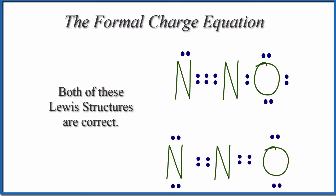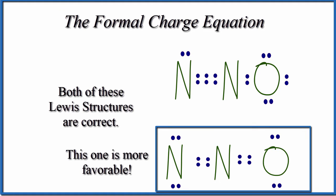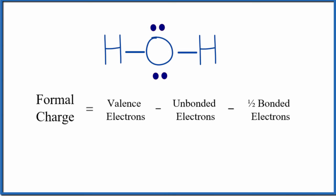I won't go into the theory of formal charges a lot here, other than to say that when we draw our Lewis structures, sometimes we can draw them two different ways and still obey the octet rule. What formal charges do is tell us a reasonably reliable way to determine what is the most favorable or most likely Lewis structure we'll see in the real world. The best Lewis structure from the formal charge standpoint is one that has formal charges closest to zero.